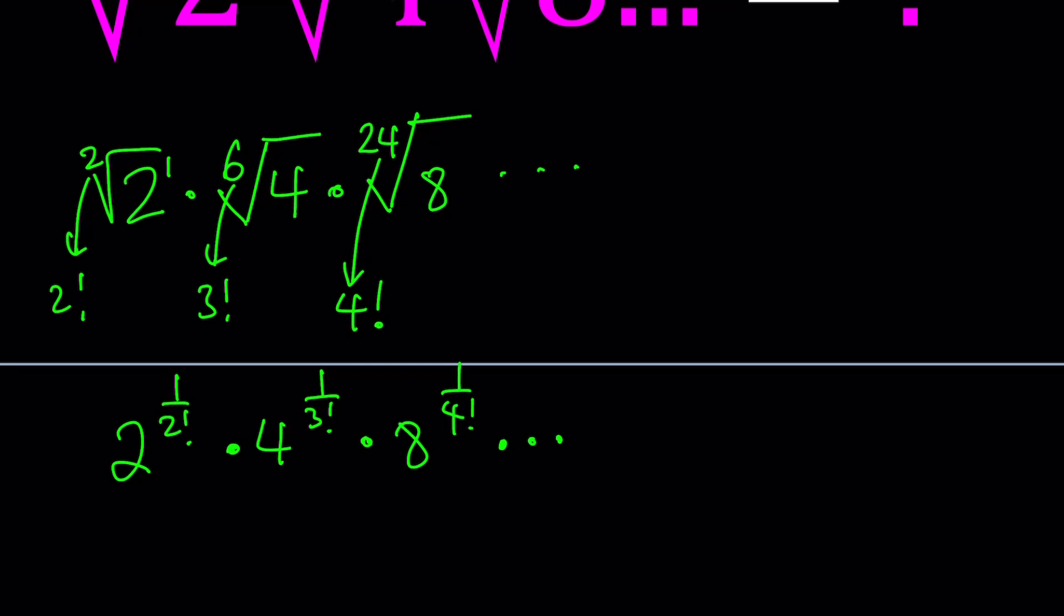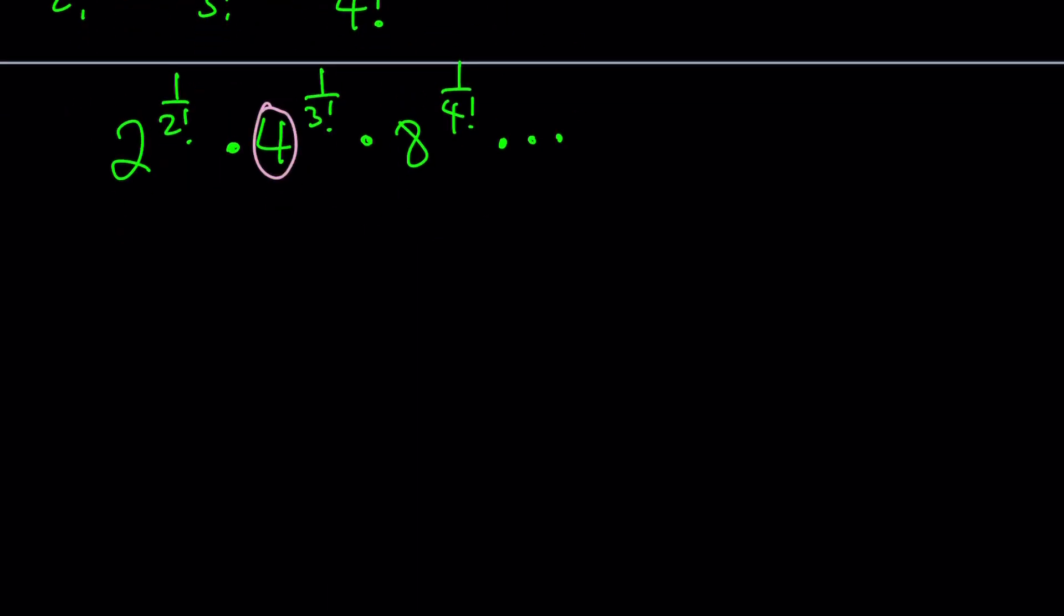Let's put it together, but simplify this a little bit more. Since we have different bases, but they're all powers of 2, we can write each one. For example, 4 can be written as 2 squared, 8 can be written as 2 to the 3rd, and so on and so forth. The next one is going to be 2 to the 4th, 16, right? So we can turn this into the following. 2 to the power 1 over 2 factorial, and then 2 to the power 2 over 3 factorial, because this 2 will be multiplied by 1 over 3 factorial. And then the next term is going to be 2 to the power 3 over 4 factorial. You get the pattern, and then dot, dot, dot.